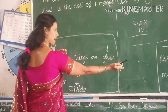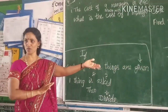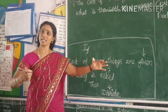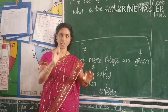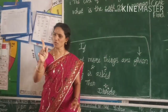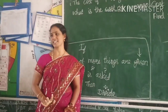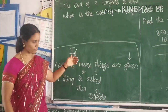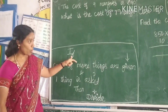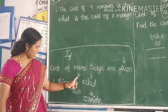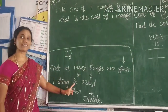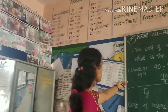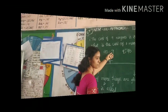Likewise for division, it is the ulta — the opposite. If the cost of more things is given and one thing is asked, then it's division. Let's see the forms of division.